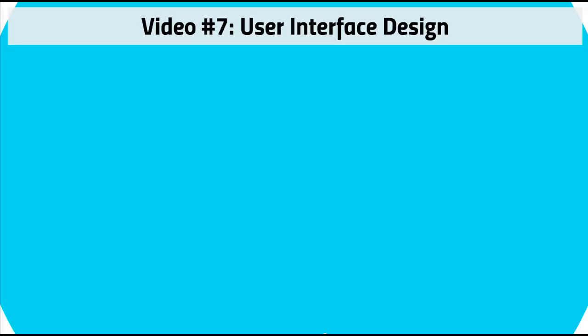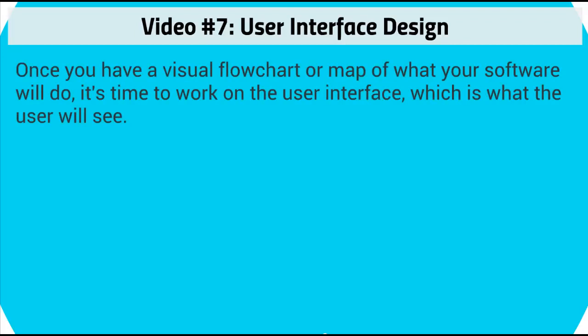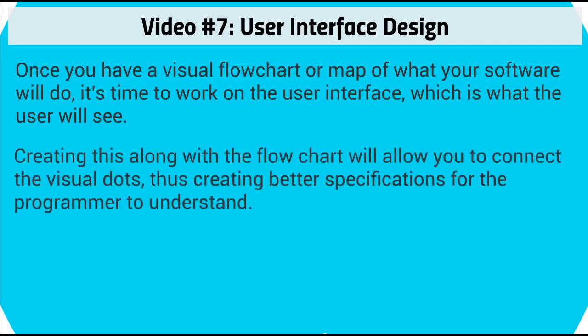Hello and welcome to video number seven. We're going to talk about user interface design. Once you have a visual flowchart or map of what your software will do, it's time to work on the user interface — what the user is going to see. The flowchart was for you and the programmer to understand, but the user interface is also for the programmer so you have an idea of how things are going to be laid out. Creating this along with the flowchart will allow you to connect the visual dots, thus creating better specifications for the programmer.